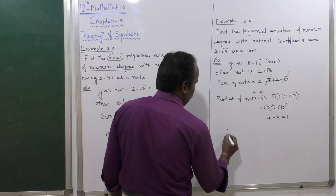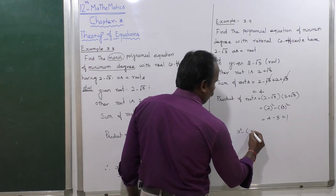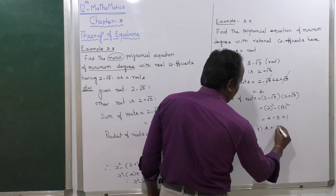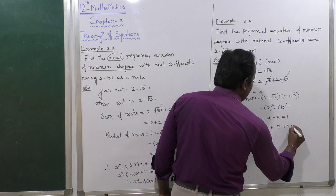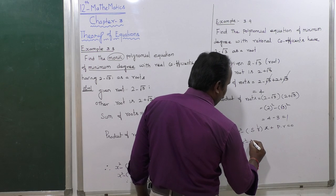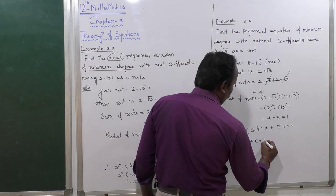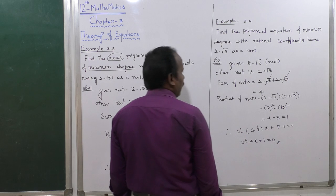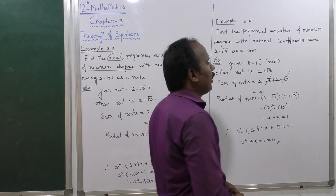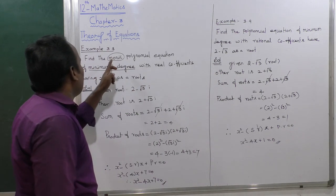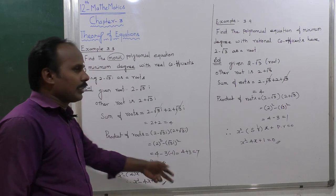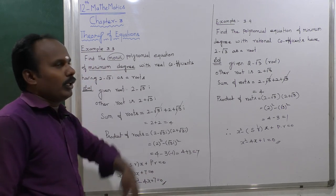Therefore, the monic polynomial equation is: x squared minus (sum of roots) times x plus (product of roots) equals 0. Substituting the sum of roots as 4 and the product of roots as 1, we get x squared minus 4x plus 1 equals 0. This is the required monic polynomial equation of minimum degree with rational coefficients.